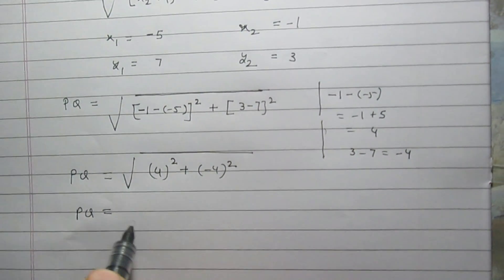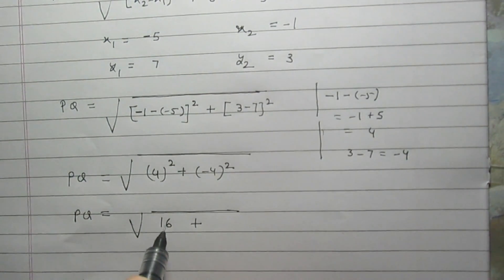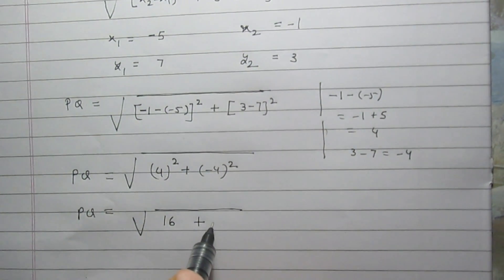So, PQ is equal to the square root of the sum of 4², which is 16, and (-4)², which is also equal to 16.